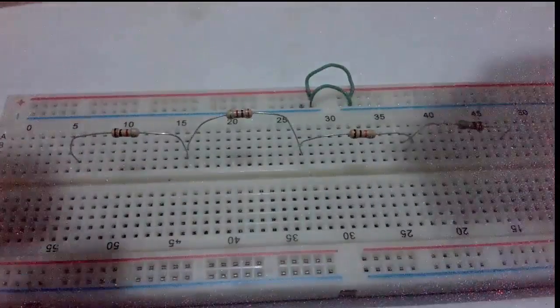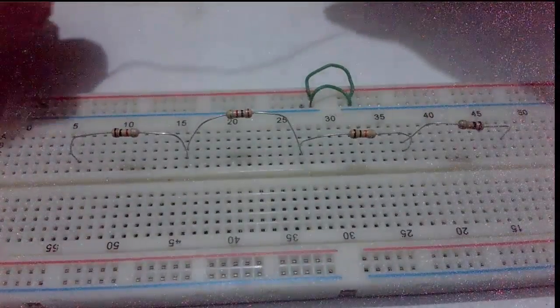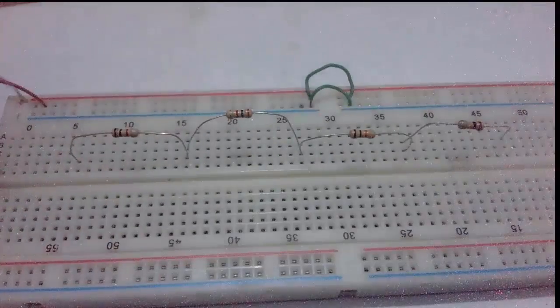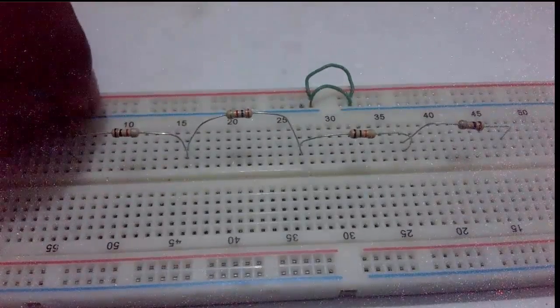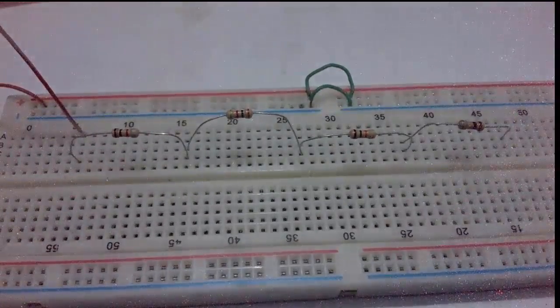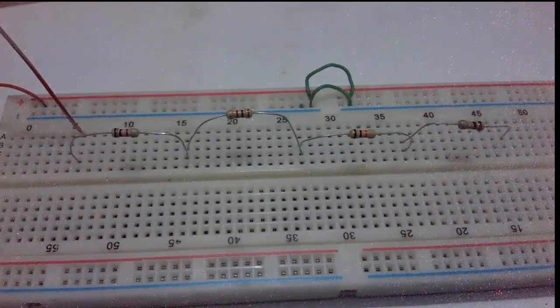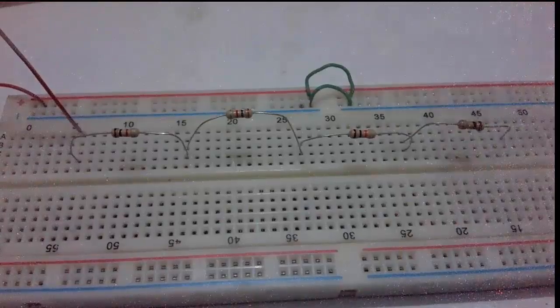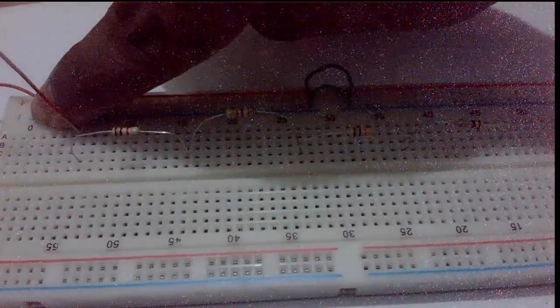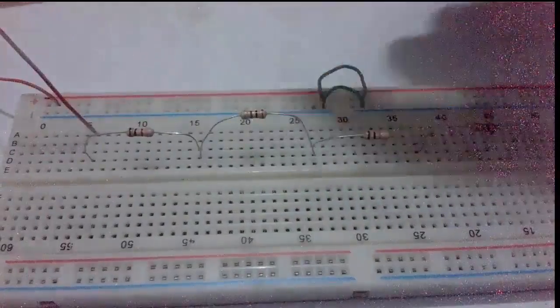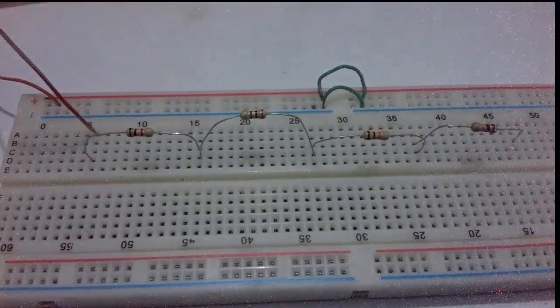Now, the positive side of the battery goes to one side of the resistor, and the negative side of the battery or source goes to the opposite side of the resistor.